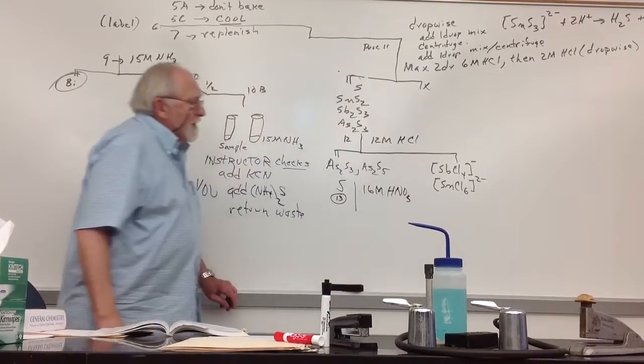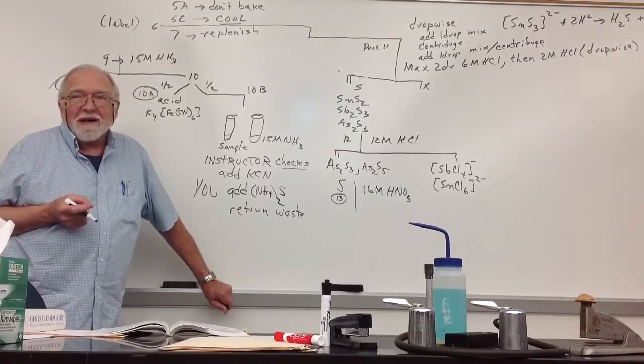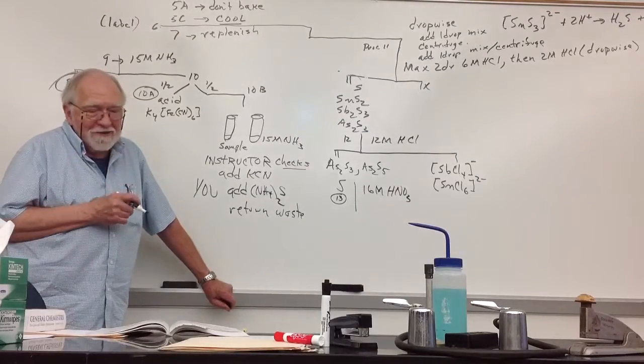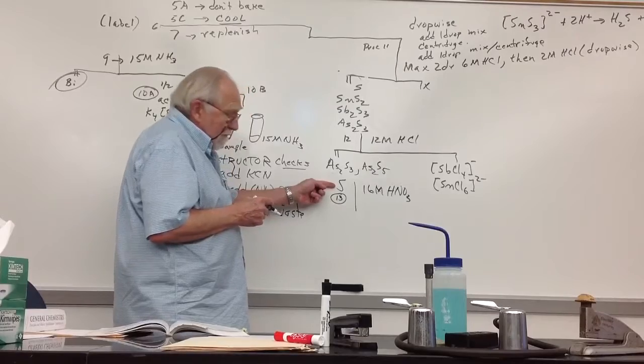It says the precipitate disintegrates. It means it breaks up and starts settling to the bottom of the test tube. Half of it settles to the bottom of the test tube, and the other half goes to the top of the test tube. What is not going to dissolve? The sulfur.